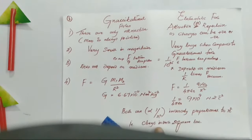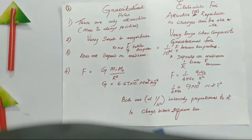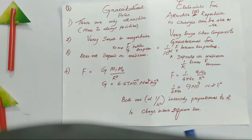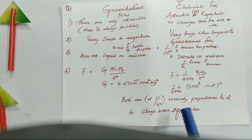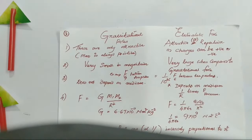The similarity is both are inversely proportional to R square — that means both obey the inverse square law. This is the similarity between gravitational force and electrostatic force. I hope you have understood the differences between gravitational force and electrostatic force.